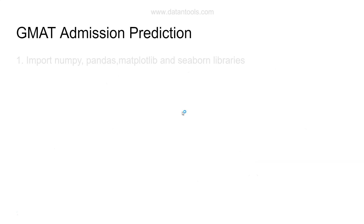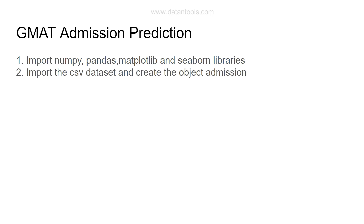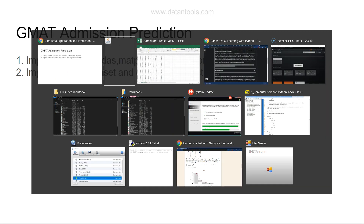First, you need to import NumPy, Pandas, Matplotlib, and Seaborn libraries. Additional libraries can be imported as needed, for example when doing modeling. If you're a beginner, know the aliases to use for each library. Then import the dataset and create an object called 'admission'.